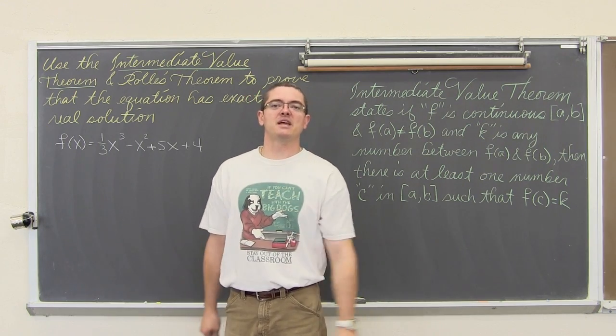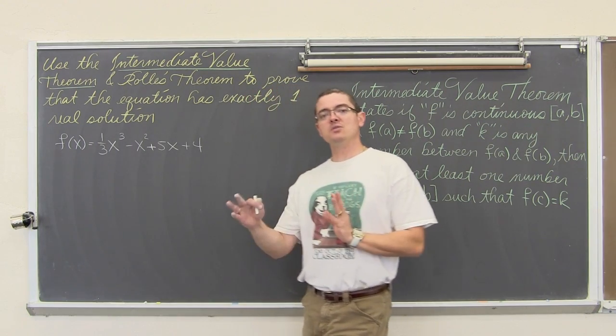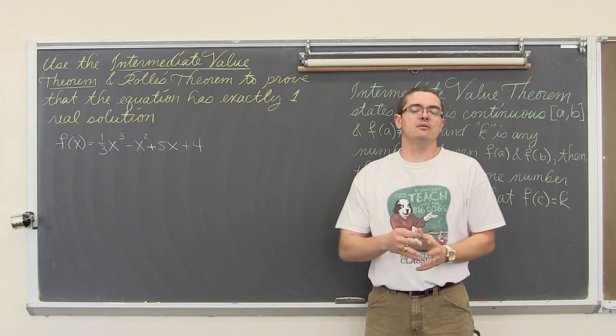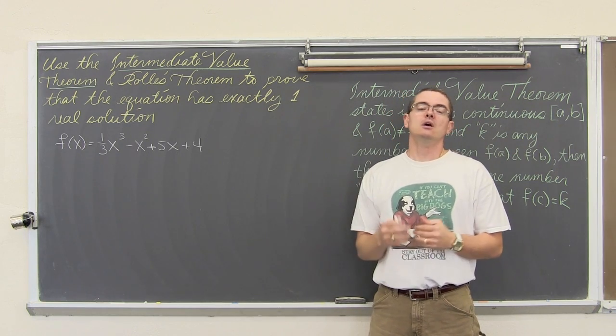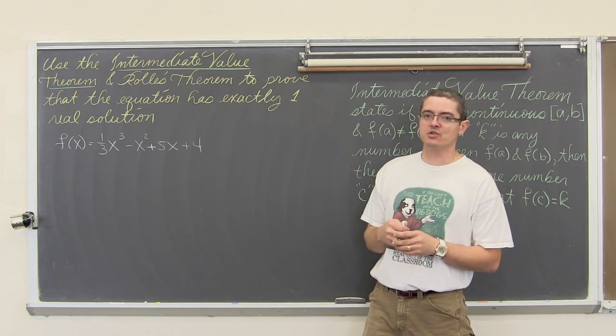Well, we have got a basic understanding of Rolle's Theorem now. We are going to use that in combination with the Intermediate Value Theorem to prove that this function only has one solution.